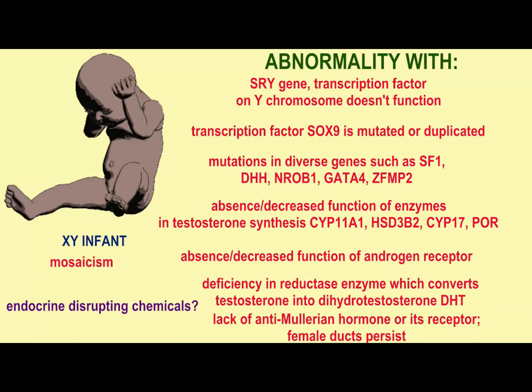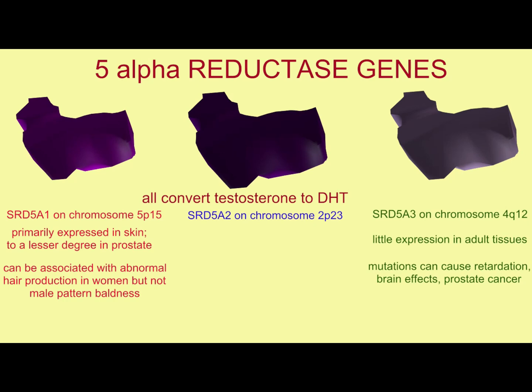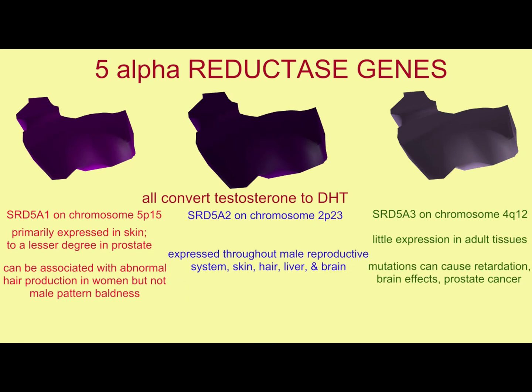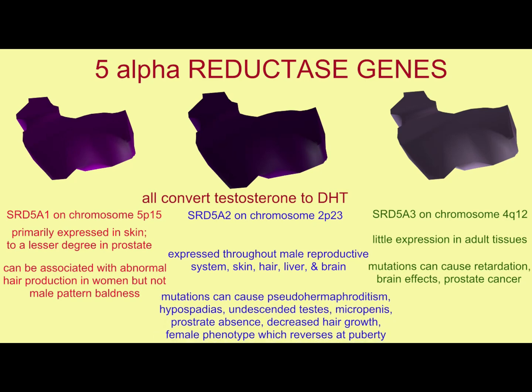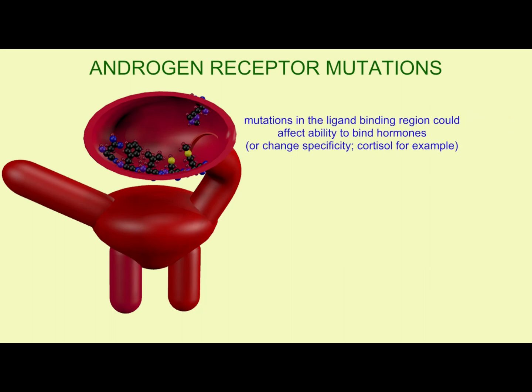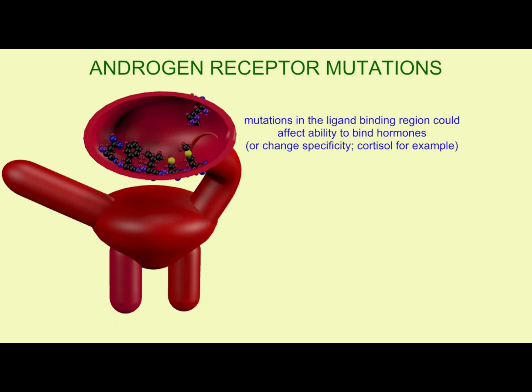Testosterone typically is converted into one of two forms, either DHT or estrogen. The enzyme reductase is required to convert it into DHT, and that deficiency can lead to ambiguous genitalia, as would mosaicism and potentially endocrine-disrupting chemicals.